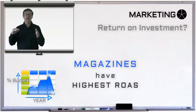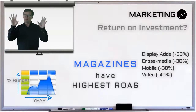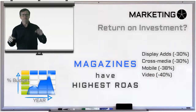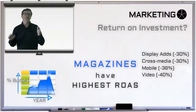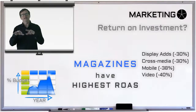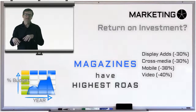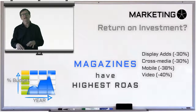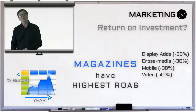That's followed by display ads — displayed on the computer or online — at around 30% lower performance than magazines. Cross-media, which means combining several advertising media, and TV are also performing around 30% lower than magazines. Mobile has a 38% lower performance than magazines, and digital video has about a 40% lower performance than magazines.